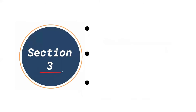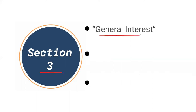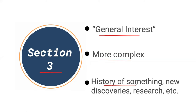Today we'll be in section three, which is the last section out of all three in the general reading test, and it's considered to be of a general interest topic. Keep in mind the topic can be anything, but it's generally considered more complex than sections one and two. Examples include perhaps the history of something, a breakdown of a new discovery, or some sort of scientific research. It's going to be a bit abstract and you might find this to be the hardest of the three sections, but we are going to tackle it together.